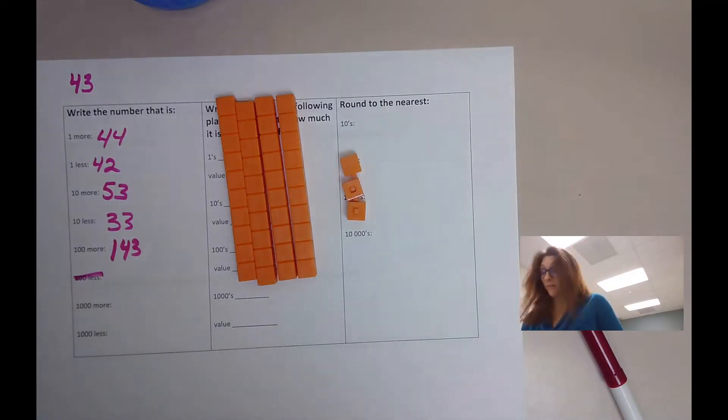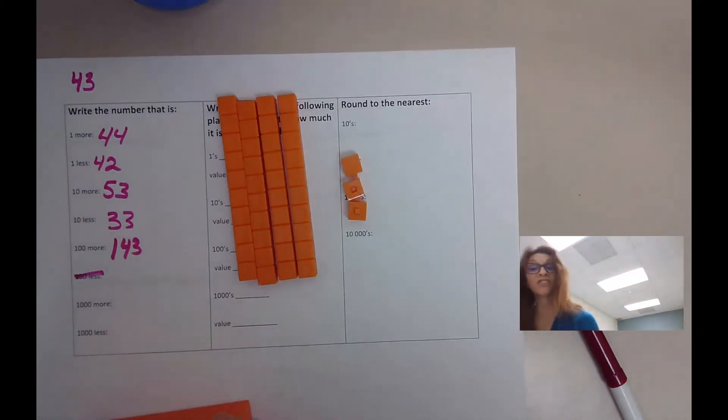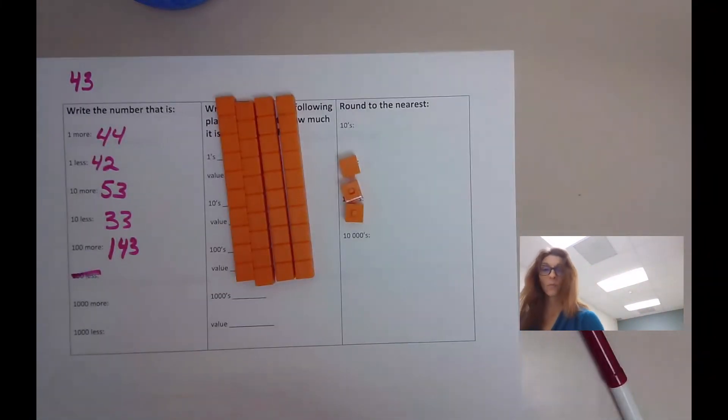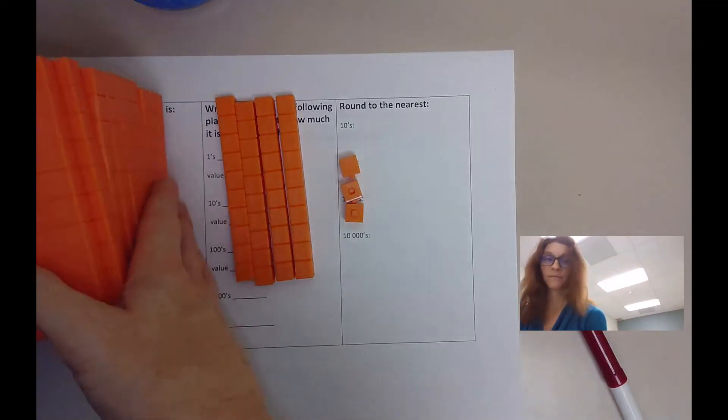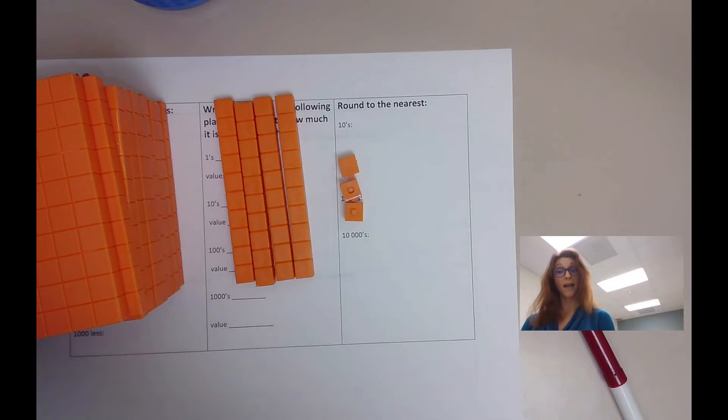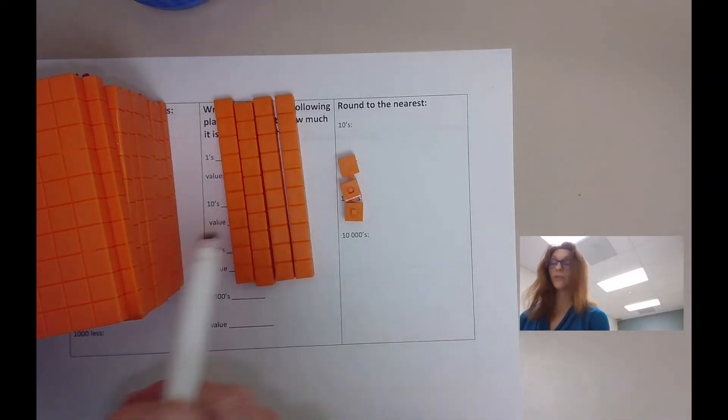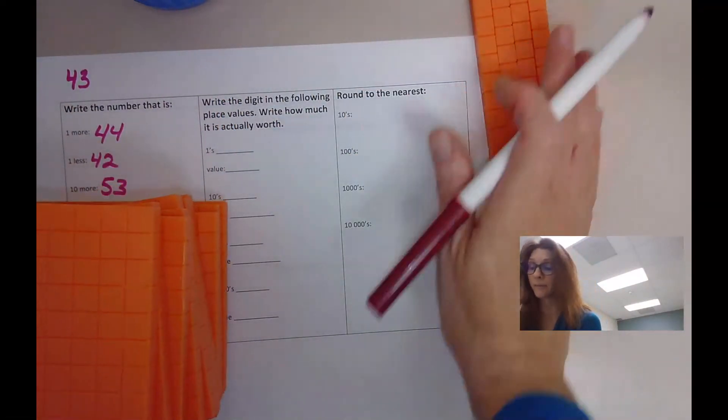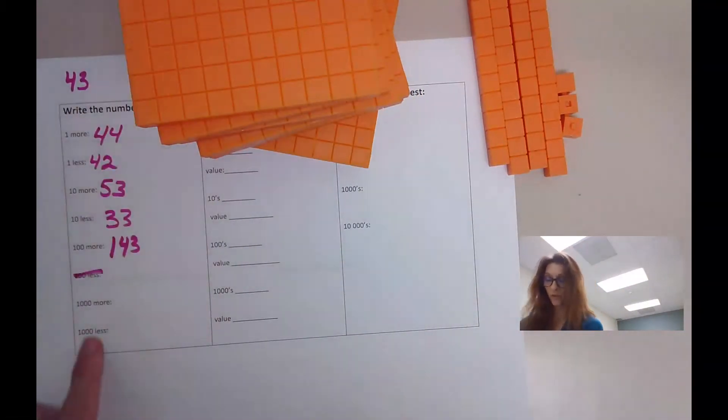100, 200, 300, 400, 500, 600, 700, 800, 900, 1,000. 1,000 more, 1,043. Now, how do we write that? Remember our place values. We must hold the place values that don't have anything in them with a zero. So we have now 1,000.